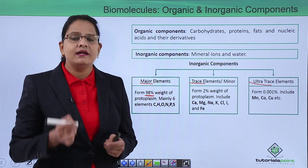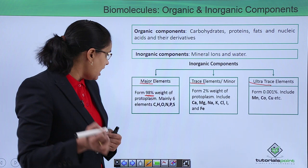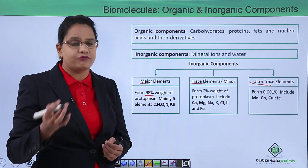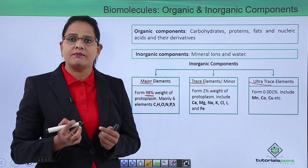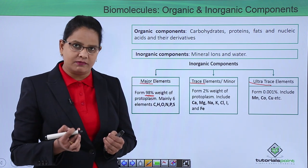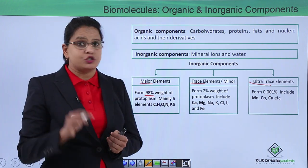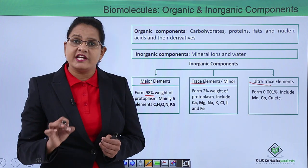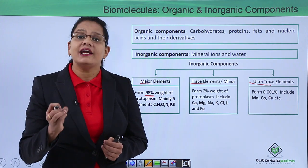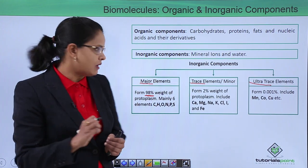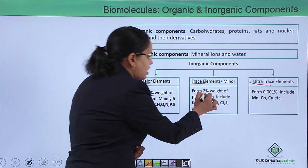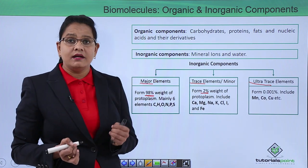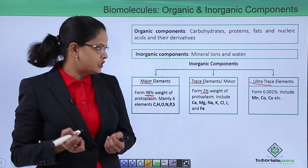The major elements are carbon, hydrogen, oxygen, nitrogen, phosphorus, and sulfur. Then the trace elements — do not confuse with the word 'trace.' Trace means they are required but in lesser amounts, around 2%. These chemicals include calcium, magnesium, and potassium.